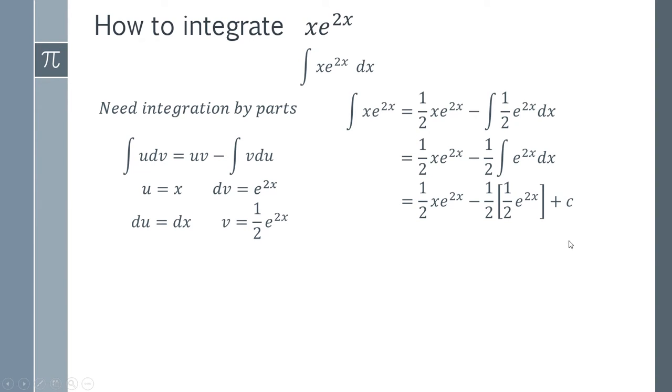Add in the constant of integration. So the only thing we've got to do is tidy this up a little bit by multiplying the two halves together. And that gives us our final answer. So I've just multiplied those two halves together and got this term. This term is just simply copied down. And we've got plus c on the end. So that is our final answer. And you can now integrate x times e to the 2x.